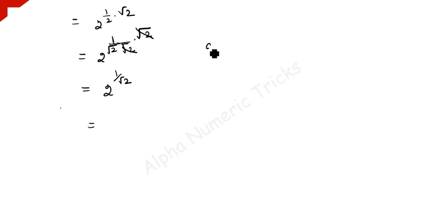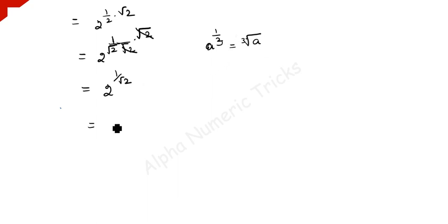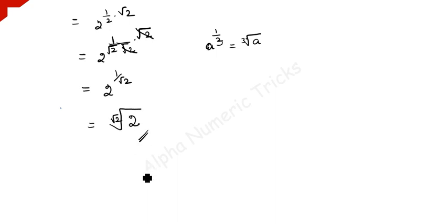Otherwise, you can also write it this way: a to the power 1/2 is the square root of a. Similarly, instead of 3 you have square root of 2 in the denominator, so this term can be written as the square-root-of-2-th root of 2. This is the answer for the given problem. Thanks for watching. Subscribe to our channel for more videos. Thank you.